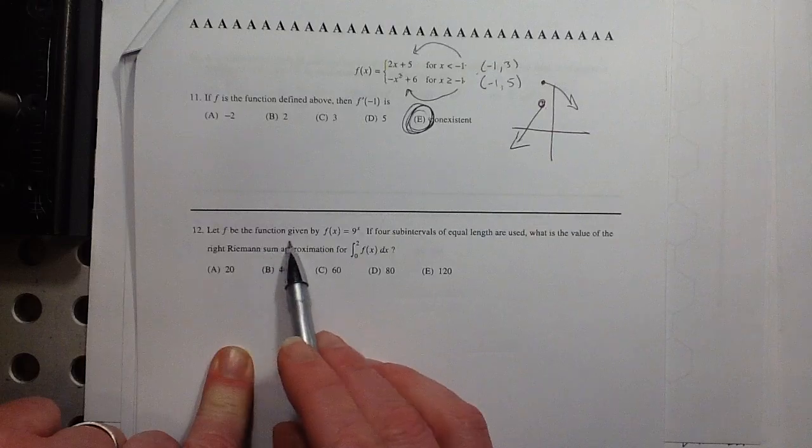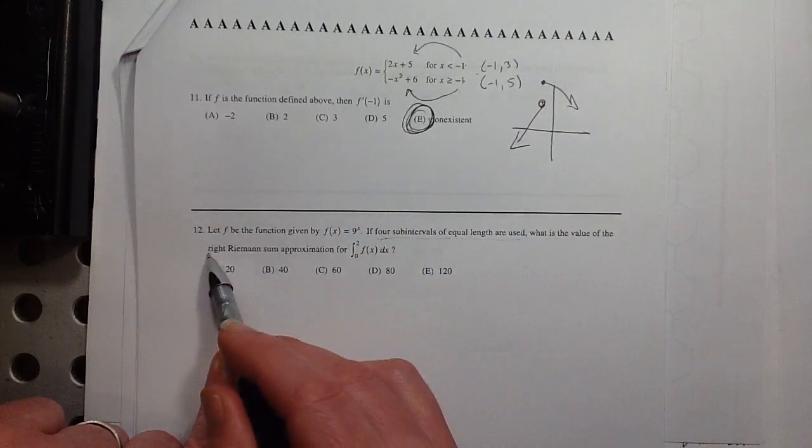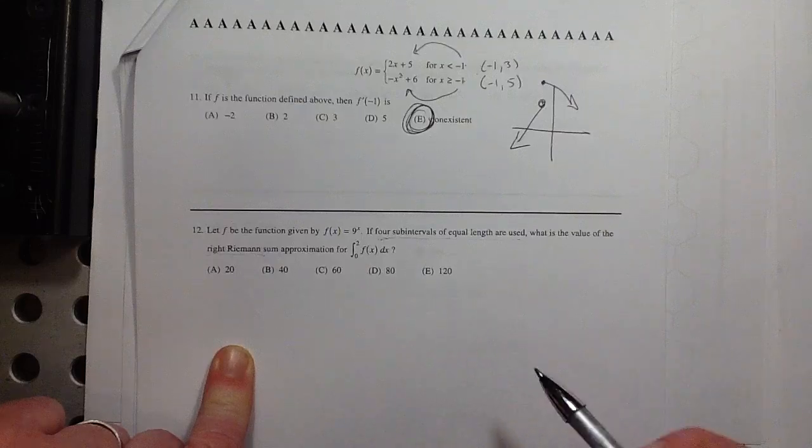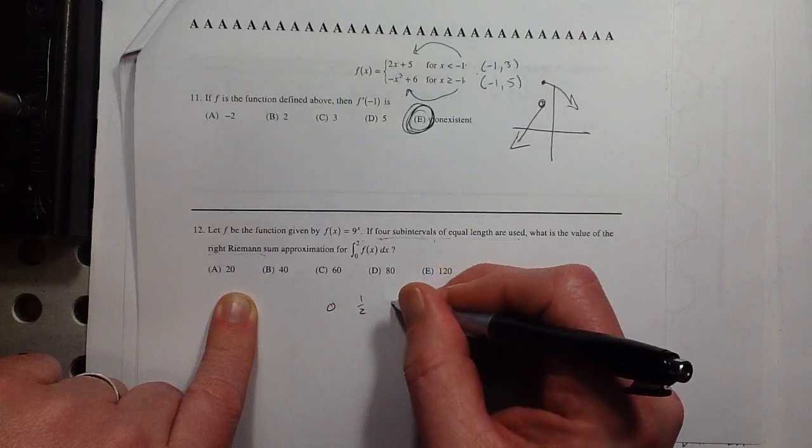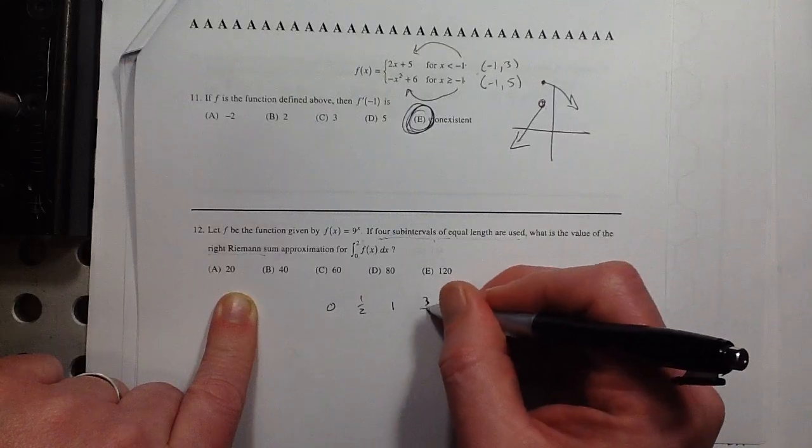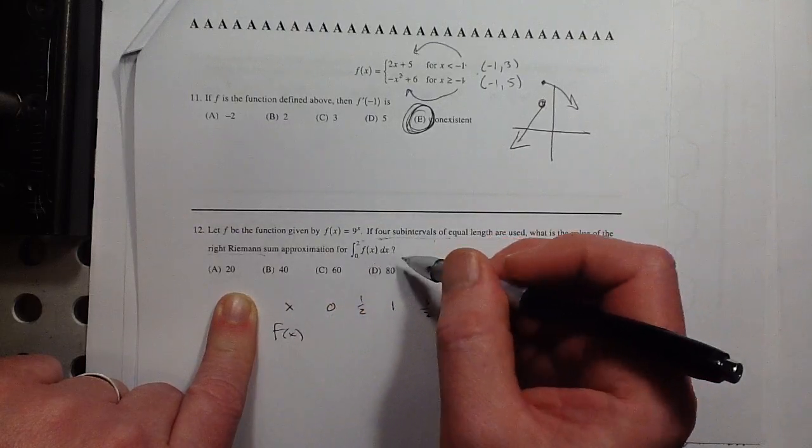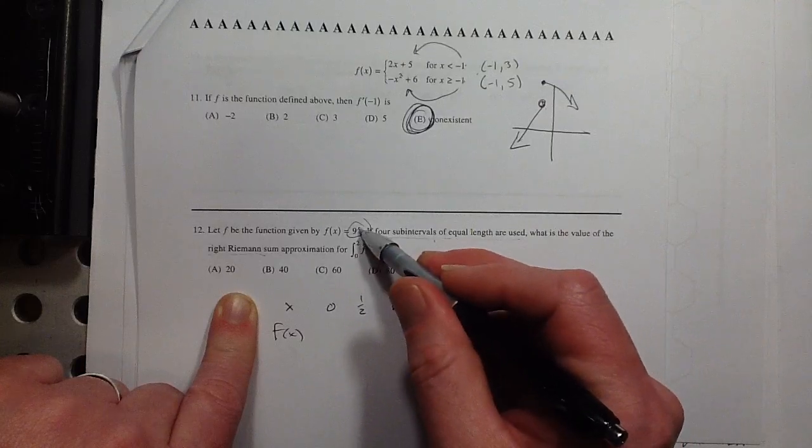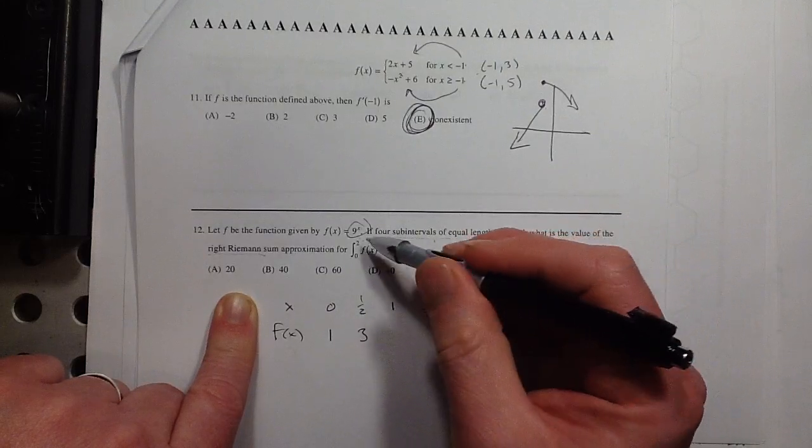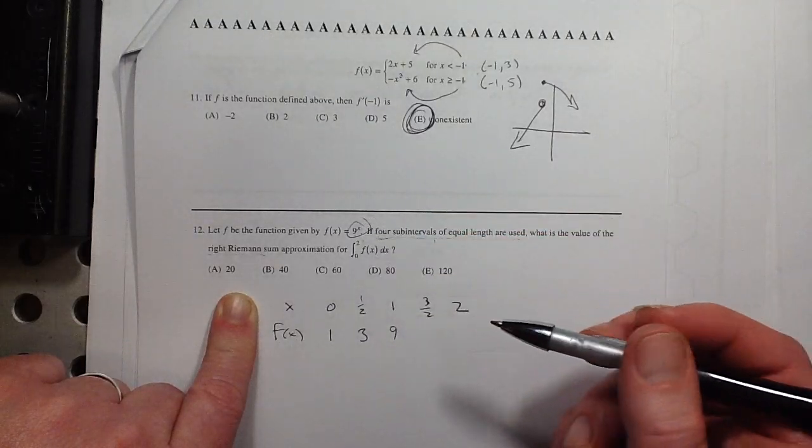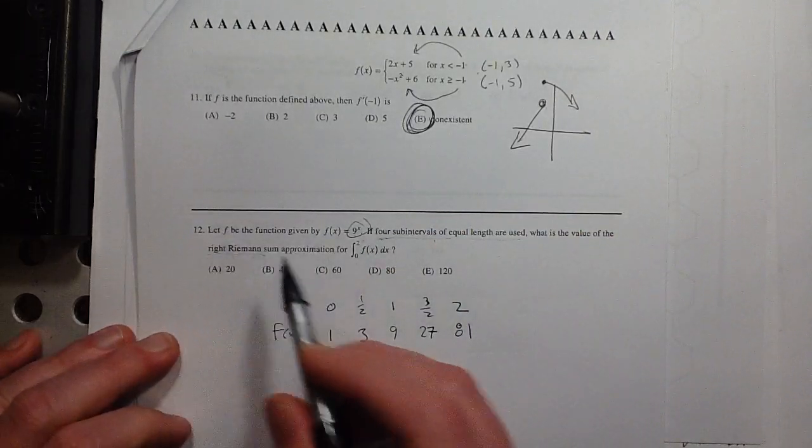Number 12. Let f be the function given by f of x equals 9 to the x. If four subintervals of equal length are used, what's the value of the right Riemann sum approximation going from 0 to 2? So if we do four subintervals from 0 to 2, that's 0, 1/2, 1, 3/2, and 2. So those would be the x values. And then f of x, plugging that into this function. 9 to the 0 is 1. 9 to the 1/2 is 3. 9 to the first power is 9. 9 to the 3/2, we just did that, 27, and 9 squared is 81.